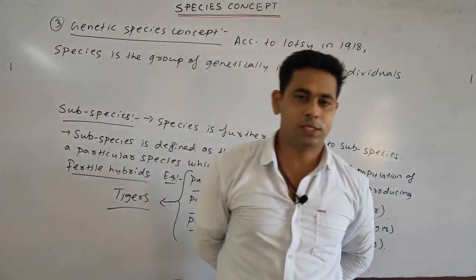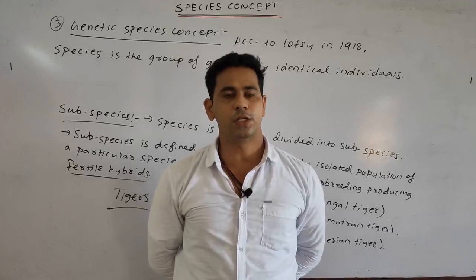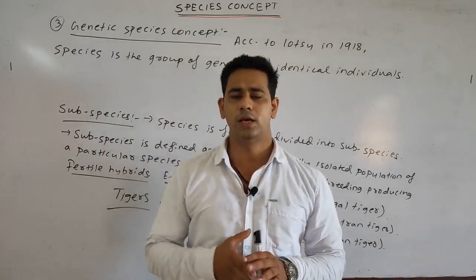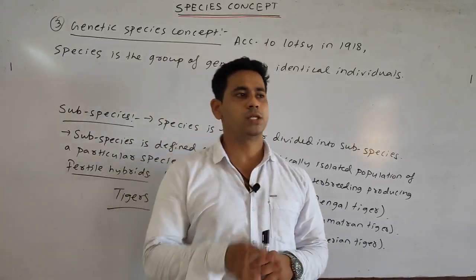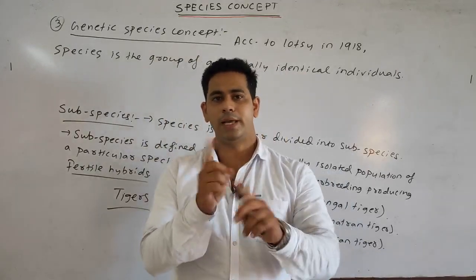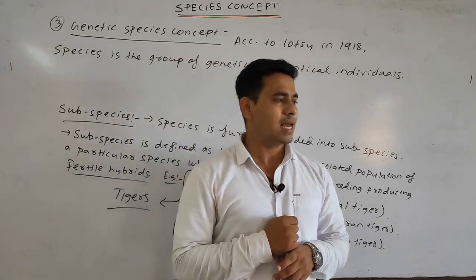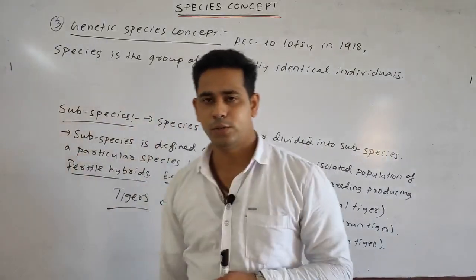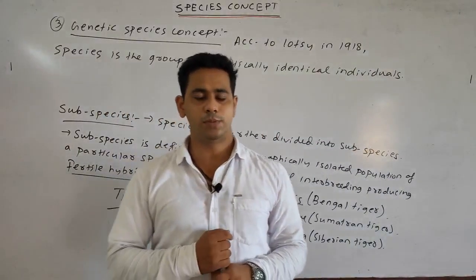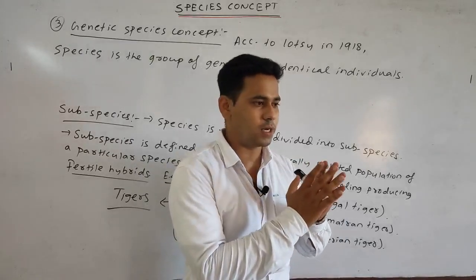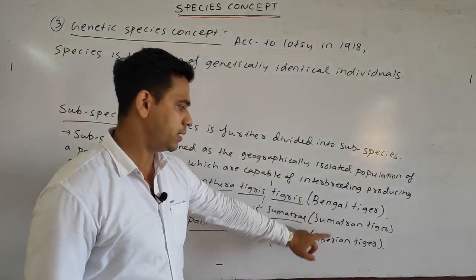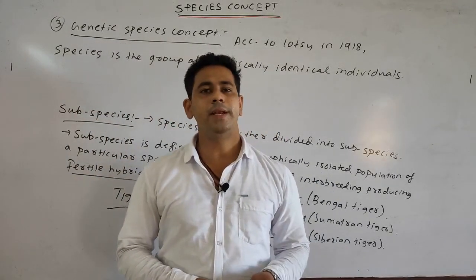Today we discussed the species concept in detail. Species is the lowest or fundamental unit of classification. We covered three species concepts: morphological, where morphological characters are similar; biological, where individuals interbreed among themselves but are reproductively isolated from other groups; and genetic, where individuals are genetically identical. Lastly, we discussed subspecies, which are geographically isolated populations of a species capable of interbreeding to produce fertile hybrids, with examples including the Bengal, Sumatran, and Siberian tiger. That's all for today — we will meet in the next class.